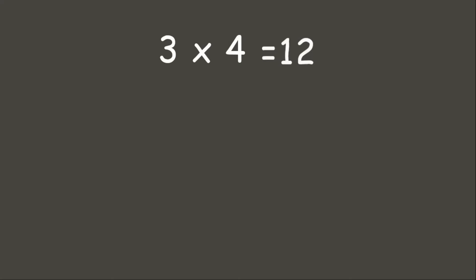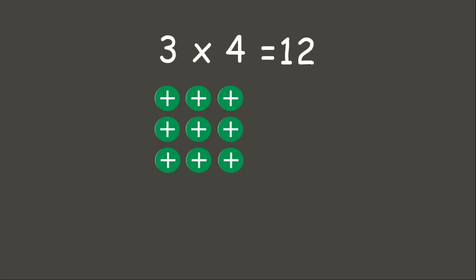Let's have our first example. Let's try to solve 3 times 4. I know that you already know the answer to this one, which is 12. But let me show you how to solve this using our counters. We have first the multiplicand, number 3. Now we need to multiply this to our multiplier, which is 4. It means that we need to make 4 groups of 3. If we count them all together,